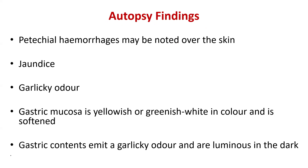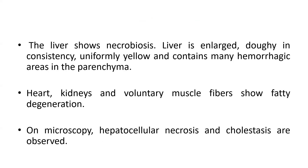Regarding autopsy findings, petechial hemorrhages may be noted over the skin. Jaundice and garlicky odor are present. The gastric mucosa is yellowish and greenish-white in color and is softened. The gastric contents may be luminous in the dark due to phosphorus. The liver shows necrobiosis and is enlarged, uniform yellow in color and ghee-like in consistency, with many hemorrhagic areas in the parenchyma.